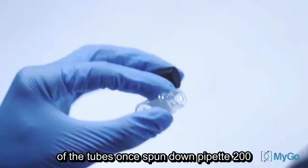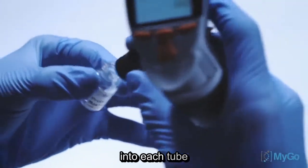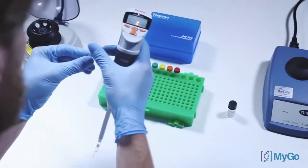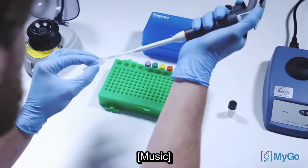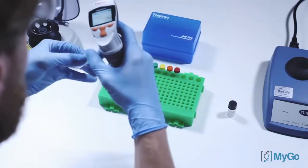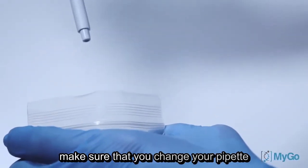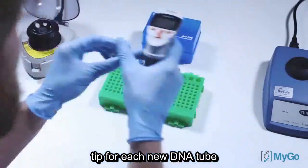Once spun down, pipette 200 microliters of the MIGO probe's master into each tube. Make sure that you change your pipette tip for each new DNA tube.